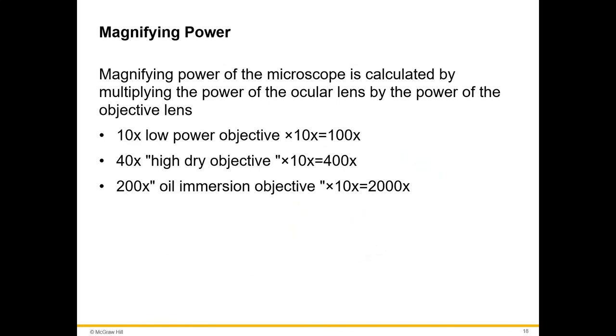Magnifying power of the microscope, or total magnification, is calculated by multiplying the magnification of the ocular lens times the objective lens. The ocular lens in a standard light microscope is usually 10x, and the objectives are usually 4, 10, 40, and 100.